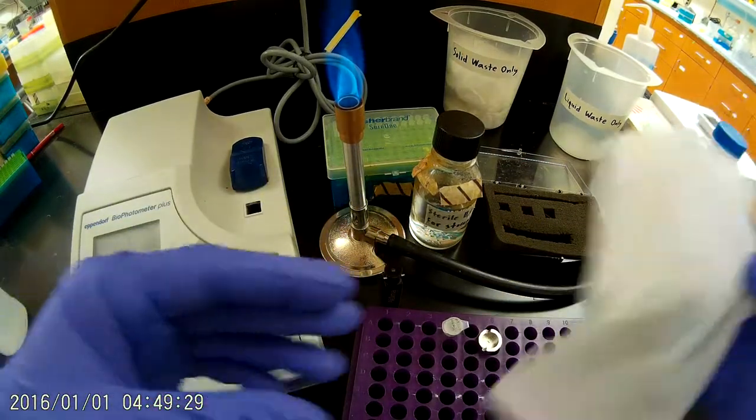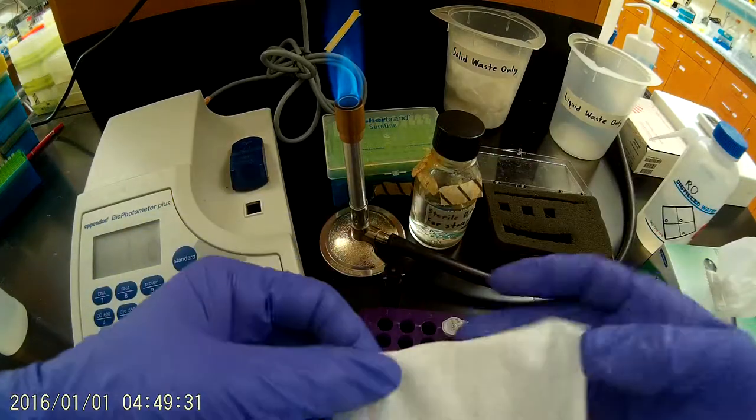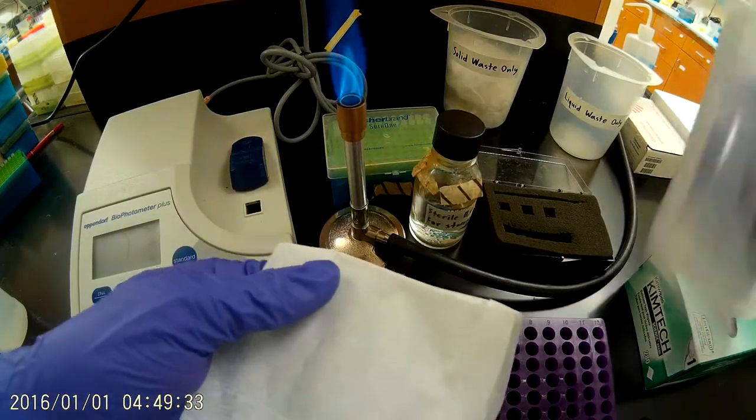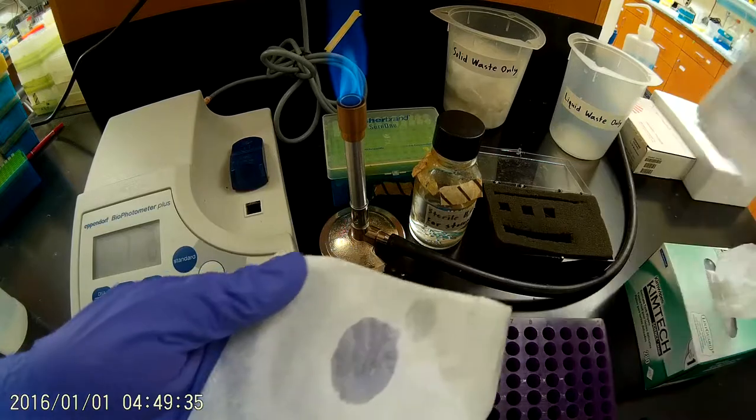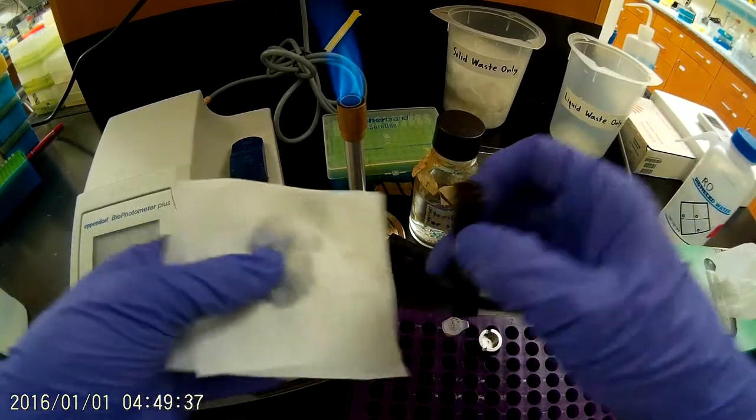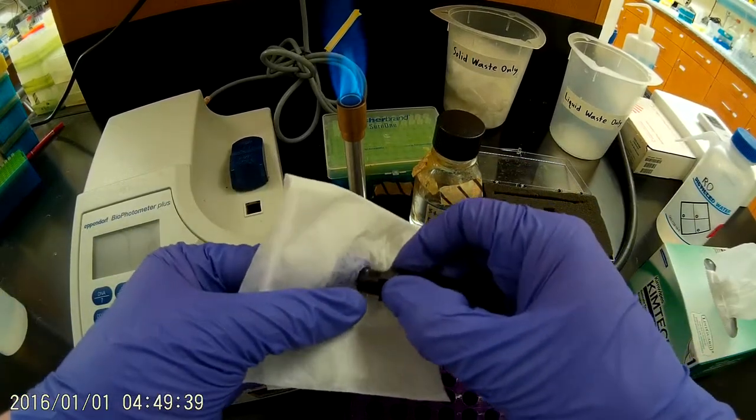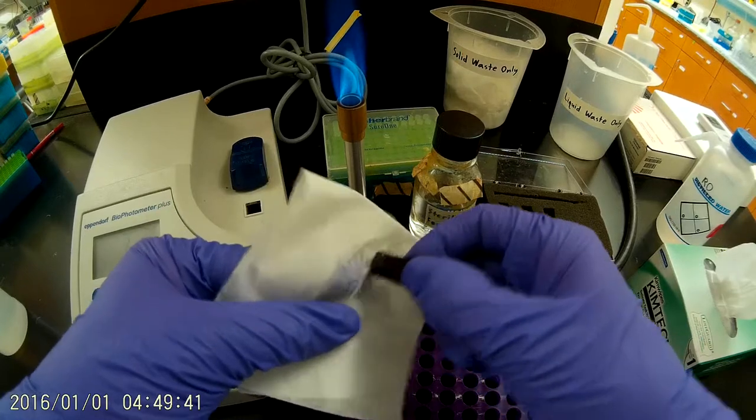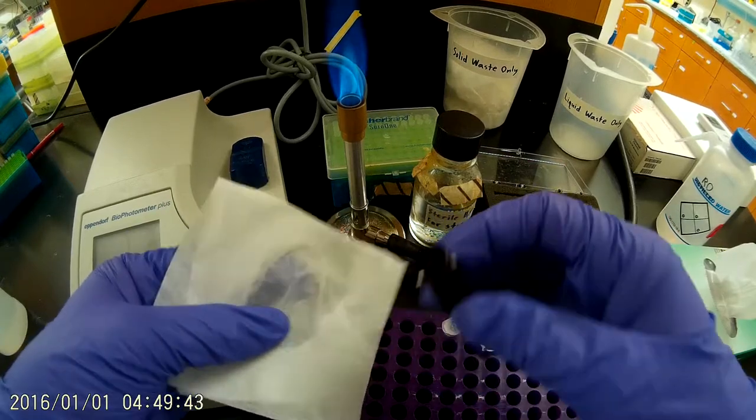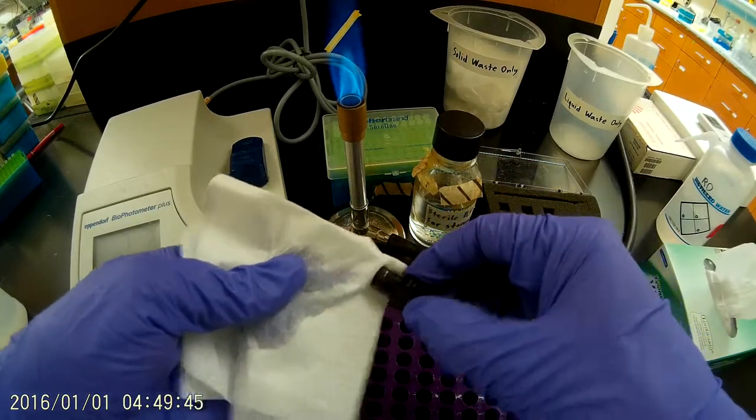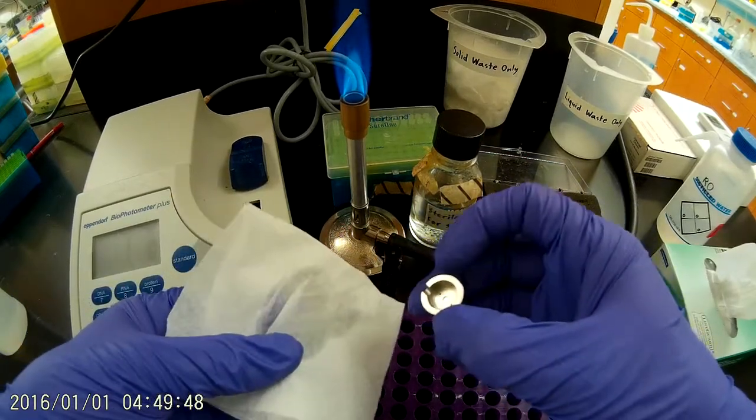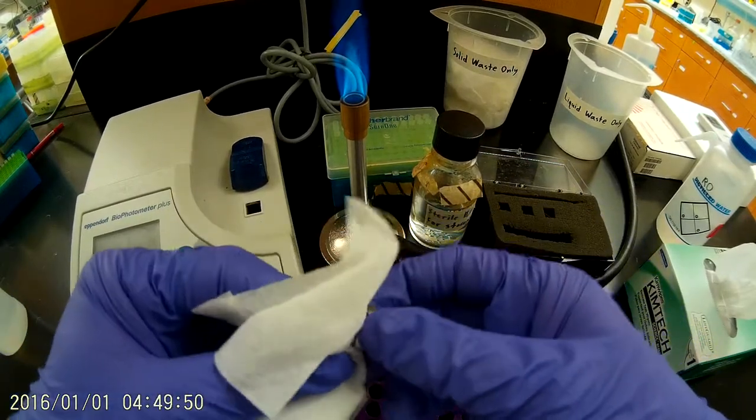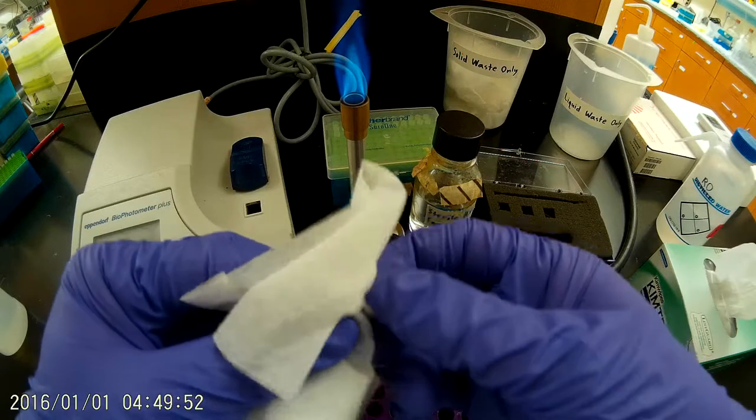We're going to clean that with a kim wipe dampened with RO water. We'll gently clean the glass surface. So that tray there, that's where DNA is going to go. Dry that off. And this is a mirror that will reflect the light back down through the device. You want to clean that off as well.